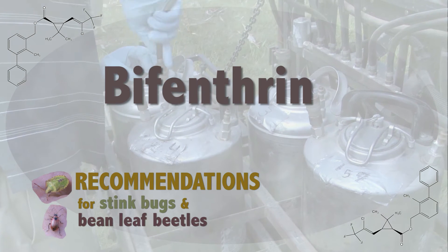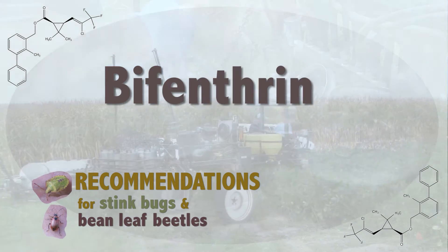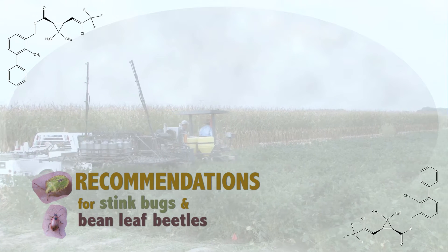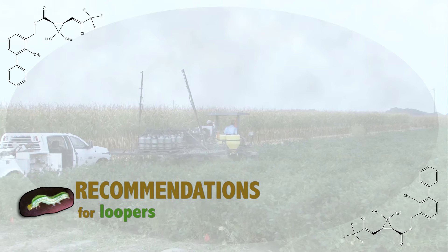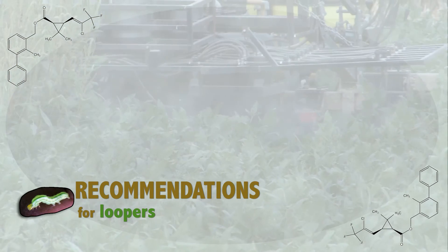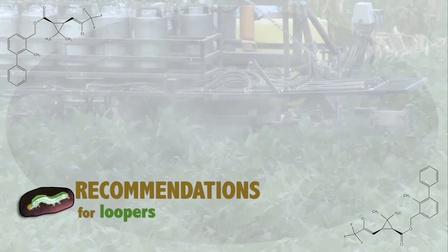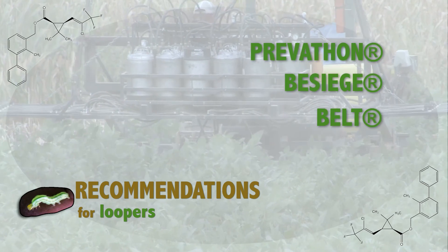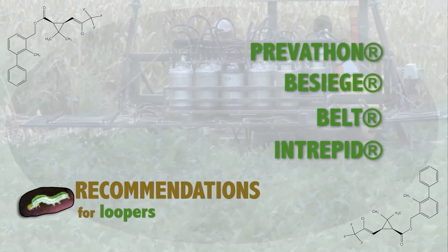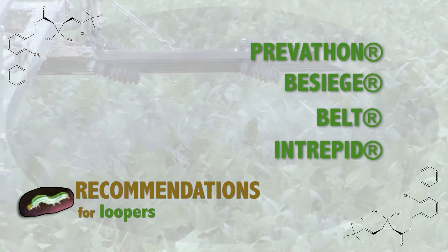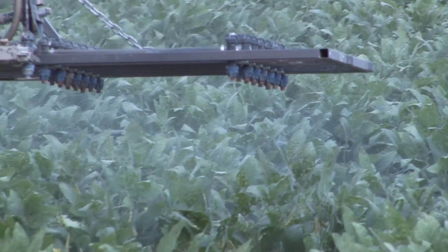Bifenthrin trade names include Brigade, Fanfare, Discipline, and Sniper — there are several different brands — at a rate somewhere around a gallon to 25 to 30 ounces or so, just to get those under control. But as mentioned, if you spray a pyrethroid out here, the chances of blowing up that looper complex is pretty great because you're wiping out your beneficial complex. So you have a few options for loopers to tank mix with that Bifenthrin: Prevathon, Besiege, Belt, and a potentially cheaper alternative would be Intrepid. Those are products that have been proven very effective for loopers. It's a pretty expensive treatment when trying to control more than one pest species, and there's just not one product that gives good control of that amount of pressure.